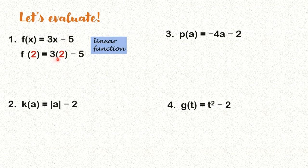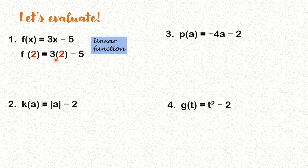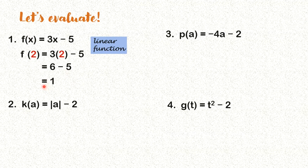So we have 3 times 2 — I replaced x here by 2 — and then minus 5. After substitution, we perform the indicated operations and then we simplify. What is 3 times 2? We get 6. So we have 6 minus 5 here. And what is 6 minus 5? We get 1. So f of 2 is equal to 1. It's very easy to evaluate functions.